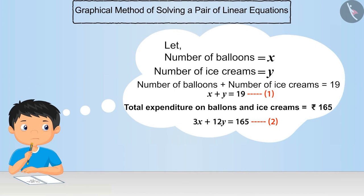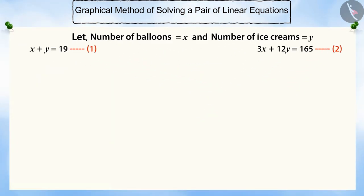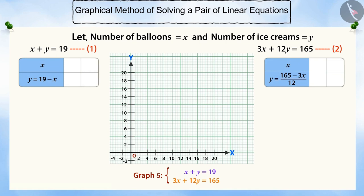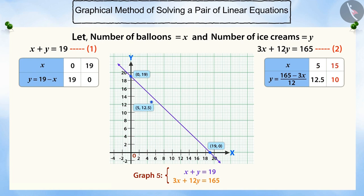In our previous video, Rahul created a pair of linear equations in two variables to find the number of balloons and ice creams he bought on his birthday. Now he wants to know those numbers by solving this pair of equations. To find this, in both the equations, for some values of x, find the corresponding values of y, and plot these points on a graph paper to get a pair of straight lines.